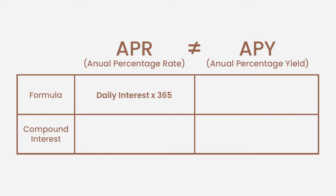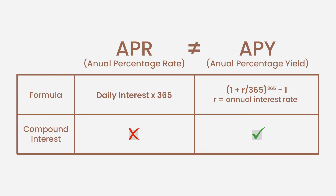APY is calculated with this formula, where R is the annual interest rate. The difference between these two is that APY takes into account compound interest, but APR does not. APY considers the effects of daily compounding, which can make a real difference over APR returns.